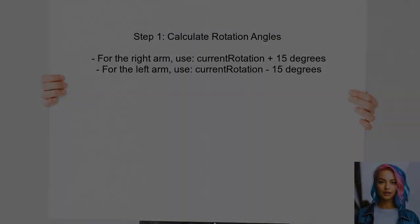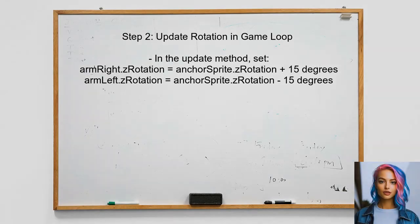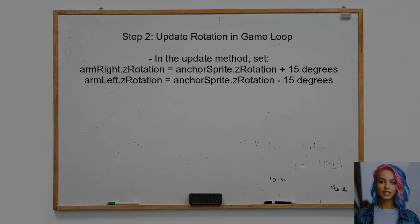To ensure the lines maintain a 30-degree angle, first calculate the rotation angles for both lines based on their current rotation. This will allow the lines to always stay 30 degrees apart. Next, update the rotation of both arms in the game loop, adjusting their angles every frame based on the anchor's rotation.